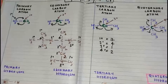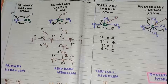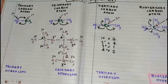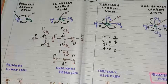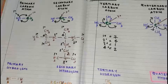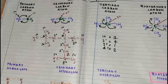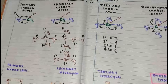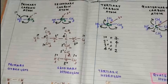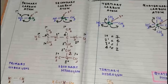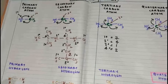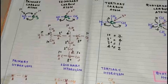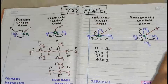Can we have a carbon atom exceeding quaternary — can we have a carbon atom attached to five carbon atoms? No, that cannot be the case, because a carbon atom can form a maximum of only four bonds. So we end up only till quaternary carbon atom.